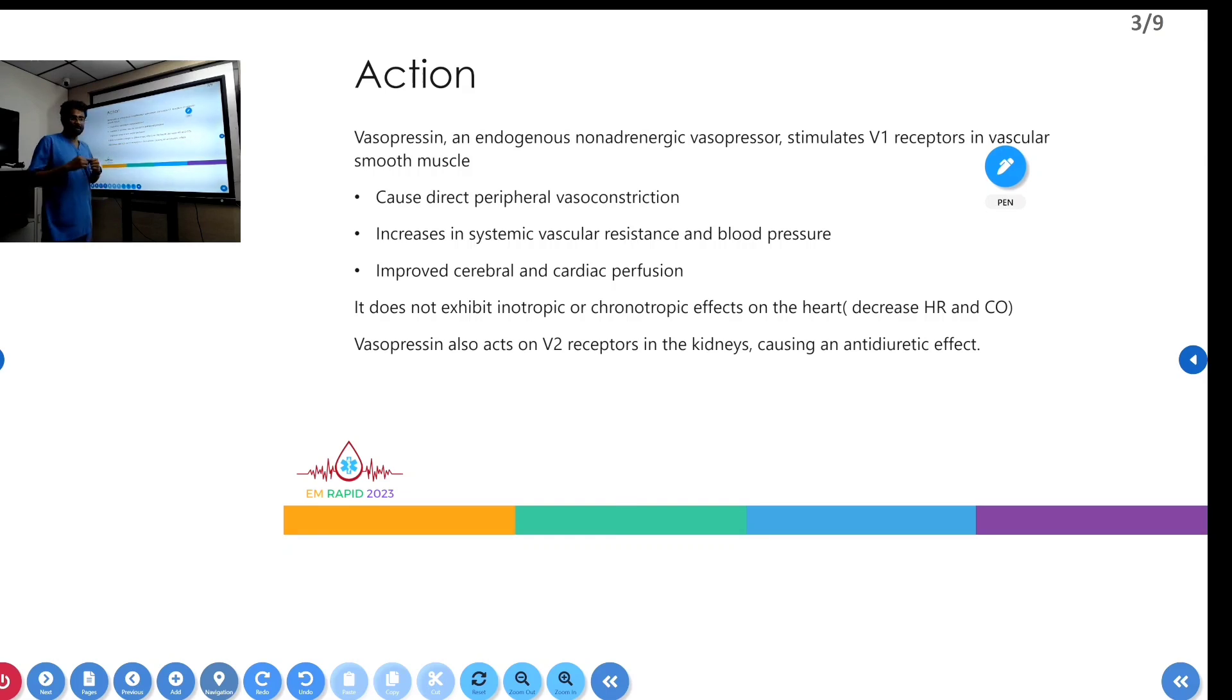Vasopressin acts on two receptors: the V1 and V2 receptors. The V2 receptor is in the kidney, whereas the V1 receptor is in vascular smooth muscle. Vasopressin acts on V1 receptors, causing direct peripheral vasoconstriction and increasing systemic vascular resistance and blood pressure.